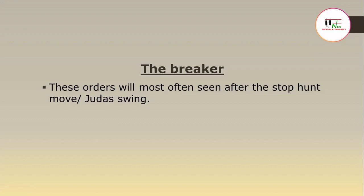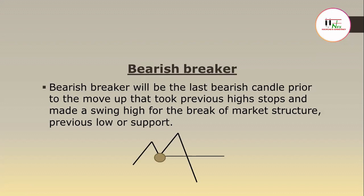Now let's look at the breaker. These orders will most often be seen after the stop hunt move or the Judas swing. The bearish breaker will be the last bearish candle prior to the move up that took previous high stops and made a swing high for the break of market structure, previous low, or support. The key difference between mitigation blocks and the breaker is that the breaker will be the last bearish candle that made the move up to take these previous highs, then made a fractal high and reversed. The mitigation block price will not take the previous highs — that is the difference between them.